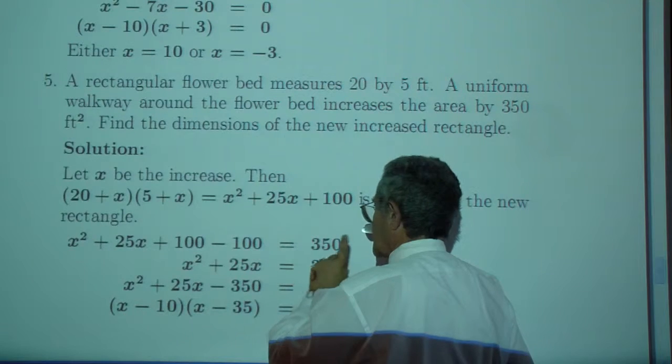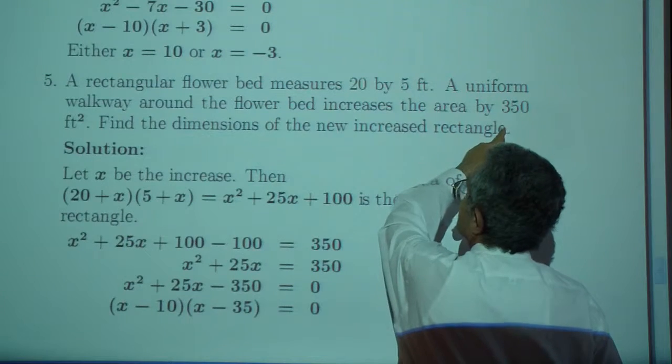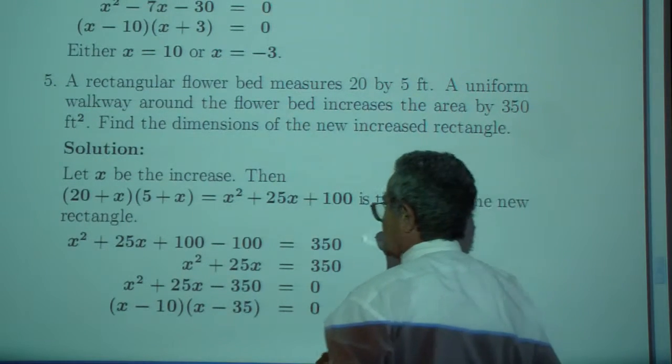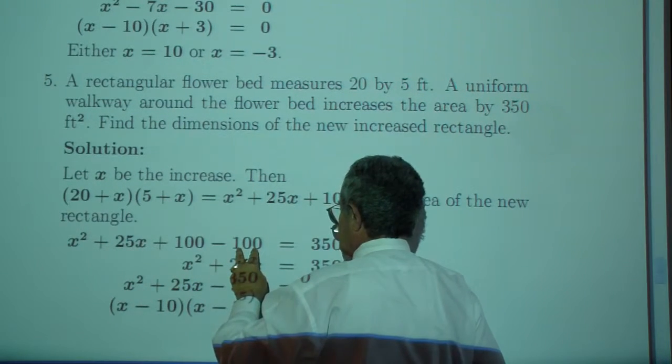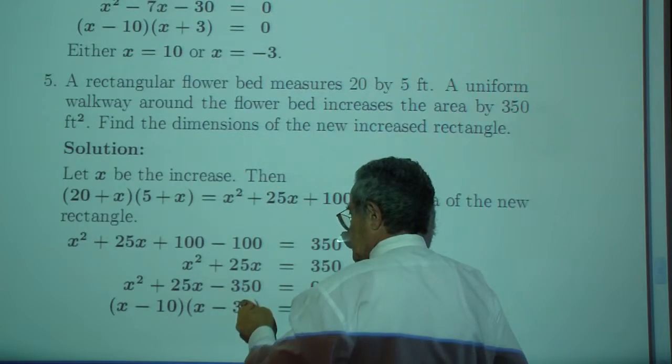Why am I left with 350? Oh, that's the increase. The increase is 350. This is the total with the increase, and this is what we had before. So that is just the increase by itself. So subtract 350.